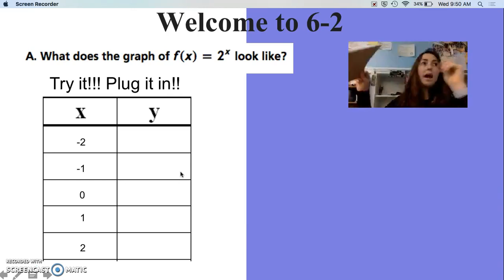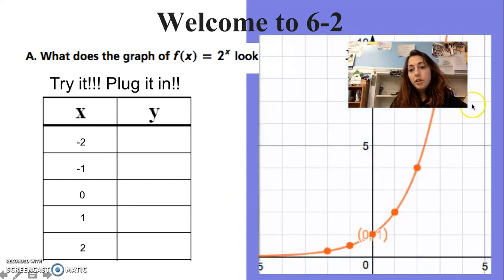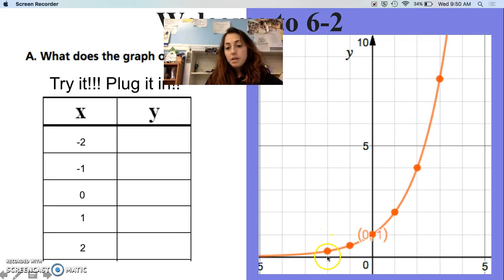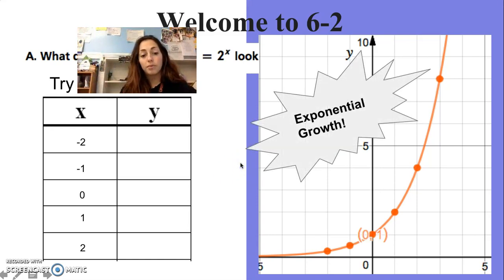So we have 1/4, 1/2, 1, 2, and 4. What's happening as we go from one to the next? Something to think about. Plot those points and your graph should look like this. Notice negative 2, going up 1/4 of the way. Negative 1, going up halfway. 0, 1, 2, 4 - those are easy. This is an example of that boomerang, of that exponential function, and it's growing, so we call this exponential growth.